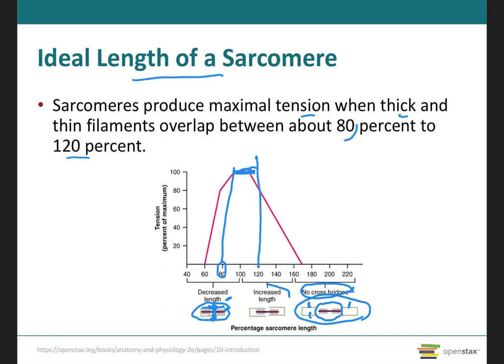Therefore the ideal length is right in the middle, where there is an overlap of myosin heads with the actin filament and enough room for the actin filaments to move closer to each other toward the M line. That middle range is where you have the ideal sarcomere length to perform muscle contraction.